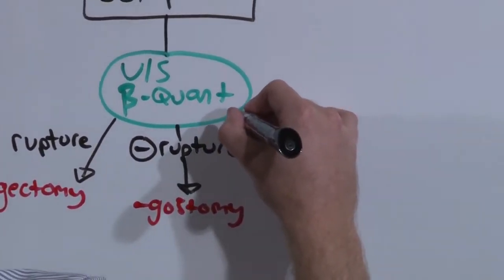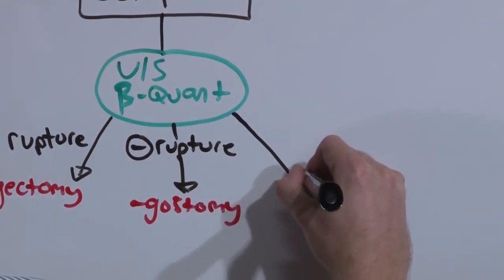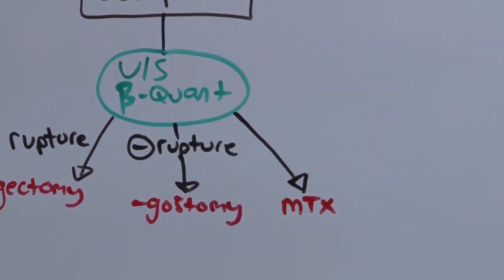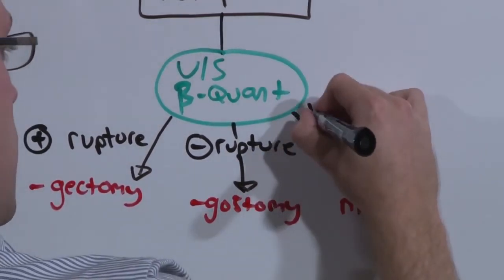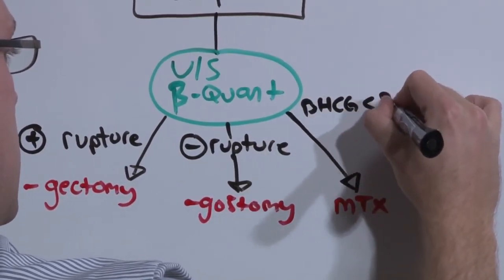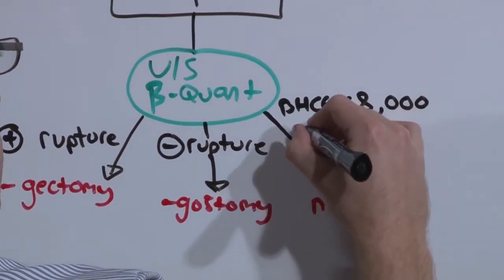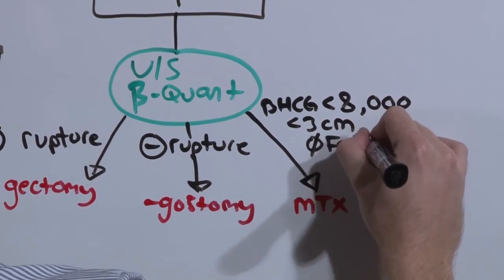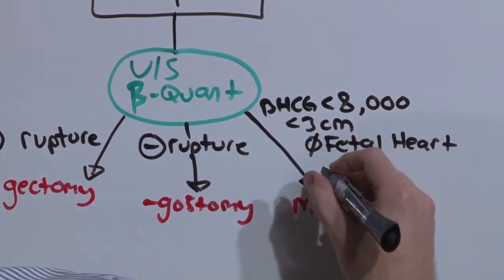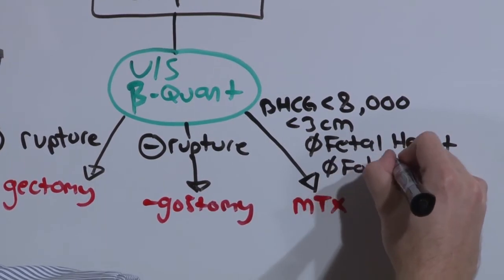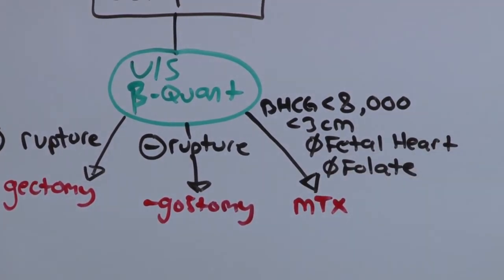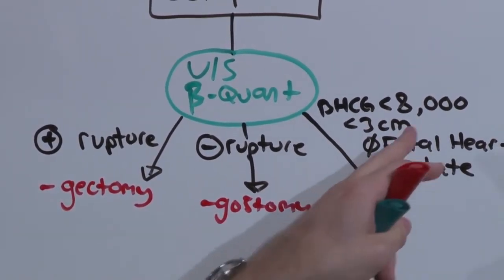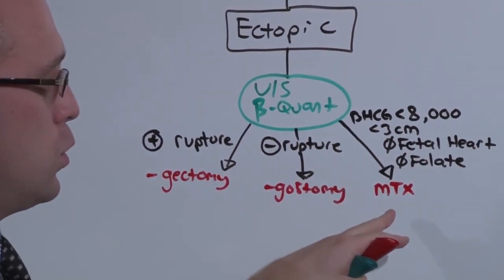And if it meets all of these criteria, you can be conservative and use methotrexate. No surgery involved. But they have to meet all four criteria. The beta HCG has to be less than 8,000. The ectopic has to be less than 3 centimeters. There have to be no fetal heart tones. And mom could not have been on folate, because folate protects against methotrexate. Generally, an ectopic pregnancy is going to surgery. Every once in a while, if you meet all four of these criteria, you're able to use medication.